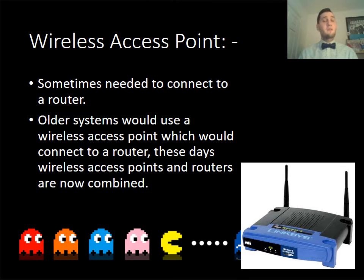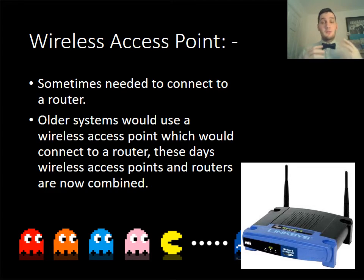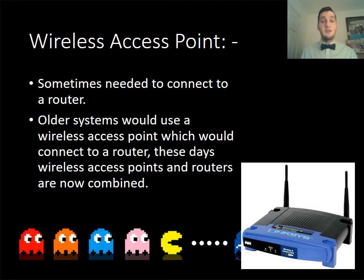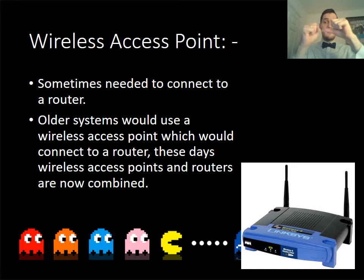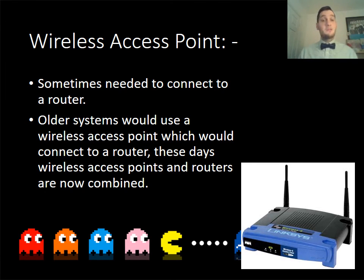The next piece of hardware you might find on a network is a wireless access point. This is generally connected to the router, because the router allows you to connect two networks together. If you want people to be able to access the internet, you can connect the wireless access point to the router; therefore when your devices connect to the wireless access point, they have a direct connection to the router and can access the internet. Basically, the wireless access point allows you access to your router — anything that connects to the wireless device can then get onto your internet.